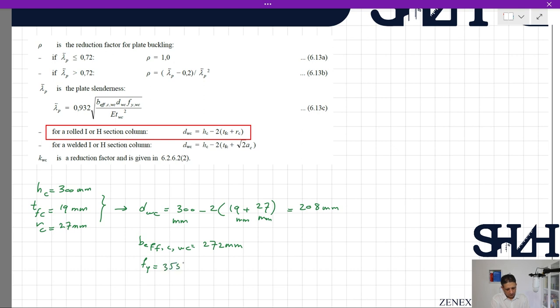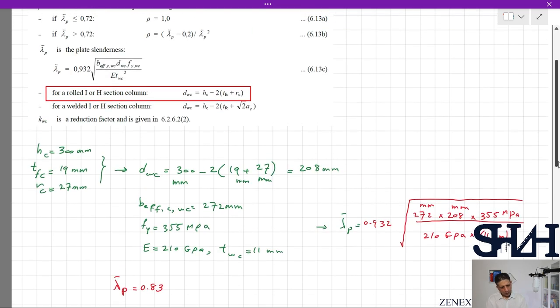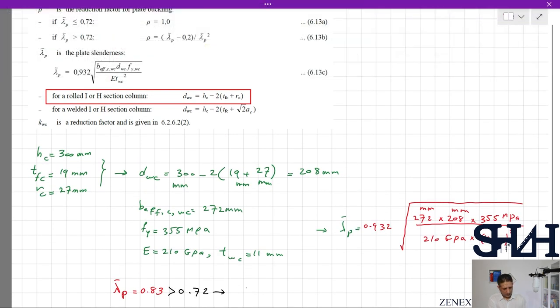fy = 355 MPa and E = 210 GPa. tw of the column is 11 millimeters. Now we can calculate λ̄p = 0.932√[(272 × 208 × 355)/(210,000 × 11²)] = 0.83. As long as it is greater than 0.72, ρ = (0.83 - 0.2)/0.83² = 0.91. This means that 9% of the capacity should be reduced due to possible buckling of the plate.